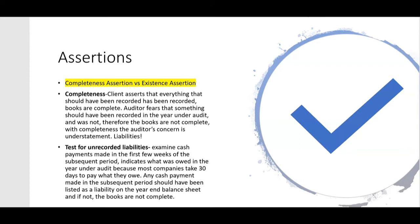You look at what the client paid in early January and then check whether that amount was listed as a liability in December. If it was not listed as a liability but was paid in January, then you might have found an unrecorded liability. The CPA audit exam will test your understanding of the difference between completeness and existence.